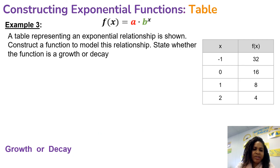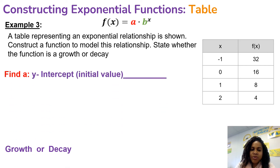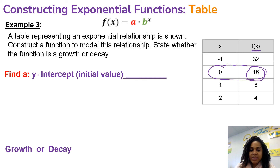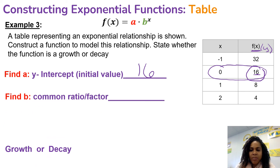Let's look at Example 3. A table represents an exponential relationship and we want to construct a function and state whether it is growth or decay. First, we find the y-intercept or initial value, which is simply where x equals zero. If you were to plot this on a graph, that ordered pair would be on the y-axis. The y-value (or f(x) output) where x = 0 is 16, so a = 16.